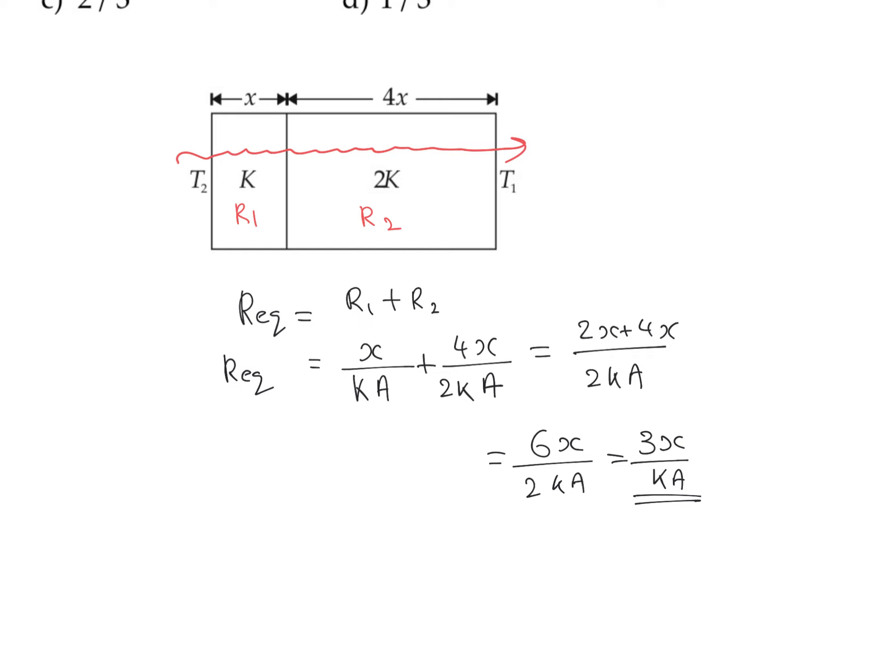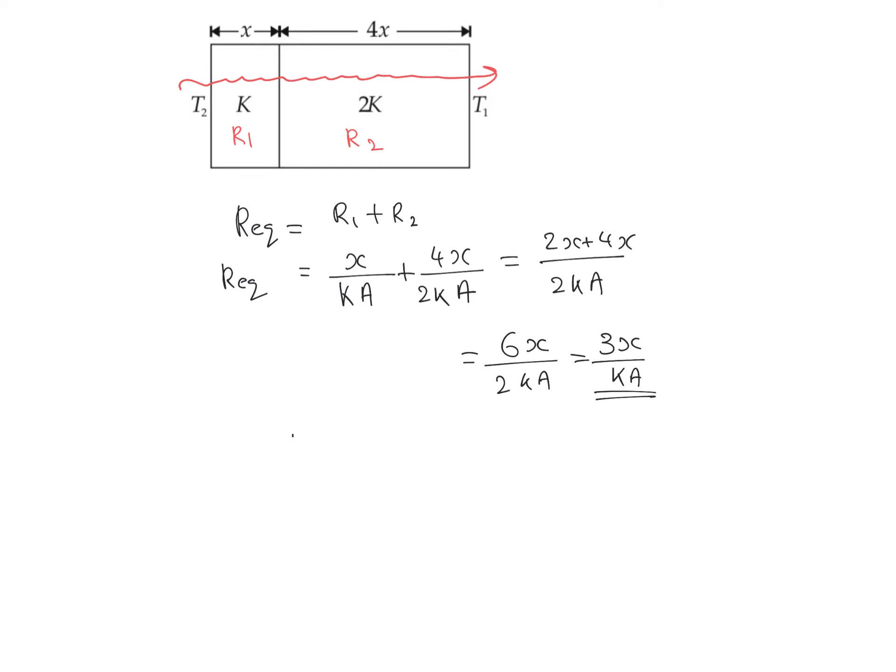KA. We can find the rate of flow of energy dQ/dt equals the total temperature difference divided by equivalent thermal resistance. The temperature difference is T2 minus T1, and the equivalent resistance is 3x divided by